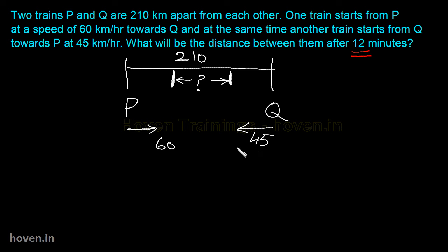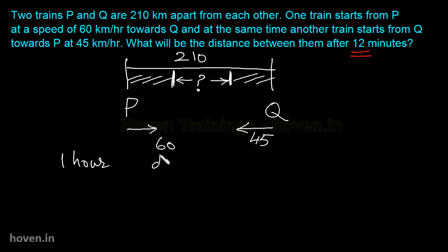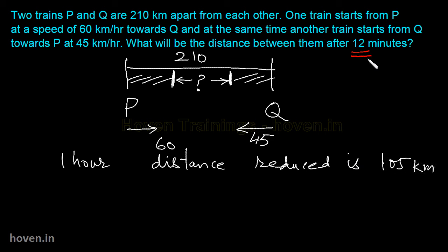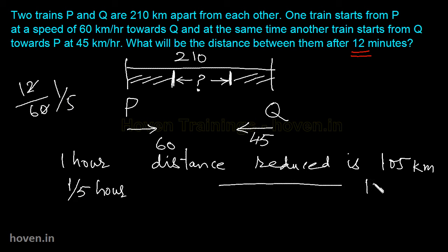So in 12 minutes, we calculate how much the distance reduces. First, convert 12 minutes to hours: 12 divided by 60 equals 1/5 of an hour. So in 1/5th of an hour, the distance will be reduced by 105 multiplied by 1/5, which comes to 21 km.